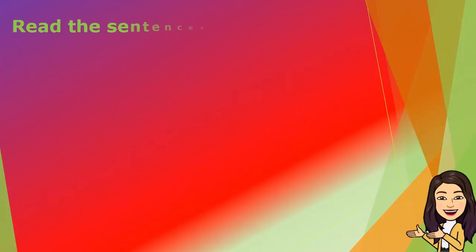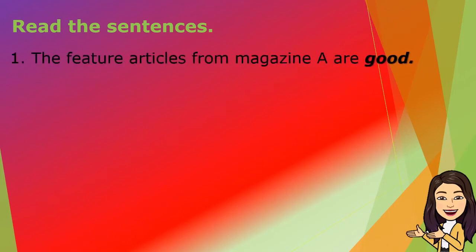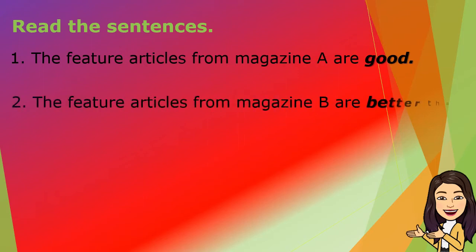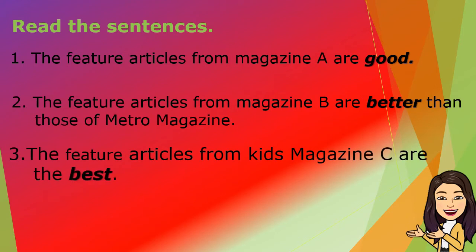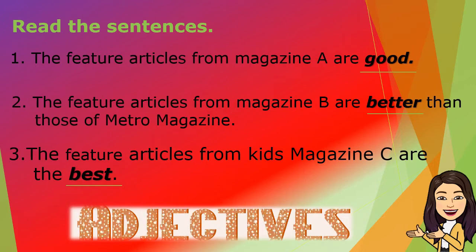Let's read the sentences. The feature articles from Magazine A are good. The feature articles from Magazine B are better than those of Metro Magazine. The feature articles from Kids Magazine C are the best. Now, what are the italicized words? We have good, better, and best. These words are called adjectives.